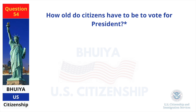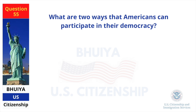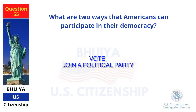How old do citizens have to be to vote for president? Eighteen and older. What are two ways that Americans can participate in their democracy? Vote. Join a political party.